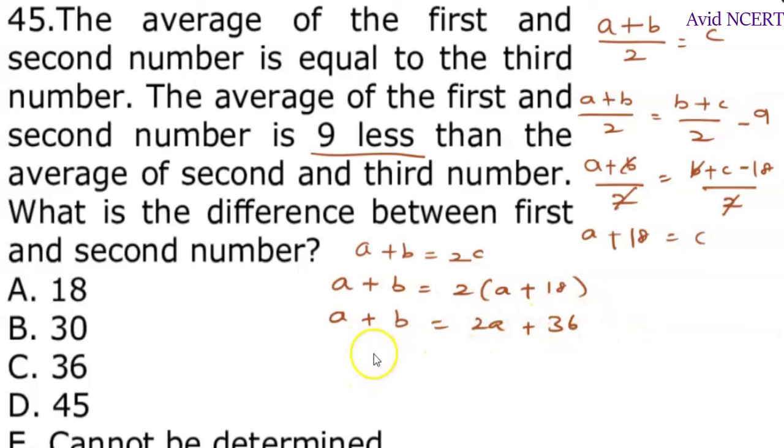A comes on this side becomes minus A, which is B minus A equals 36. From which we know that the difference between the first and second number B minus A is 36.